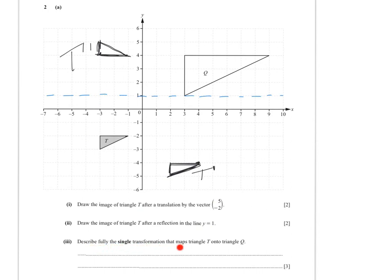Describe fully the single transformation that maps T onto Q. You should clearly identify this as an enlargement, because it became bigger. For an enlargement, you must give two extra pieces of information: the scale factor and the center of enlargement. For the scale factor — a side of length 1 in T corresponds to 3 in Q, so scale factor is 3. And checking the horizontal side: 2 in T corresponds to 6 in Q, which is 2 times 3. Scale factor confirmed as 3.